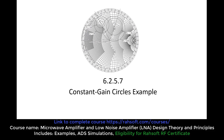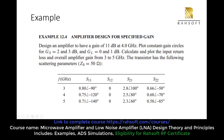In this part we are going to do an example on constant gain circles in order to understand the topic well. We want to design an amplifier for a specific gain of 11 — not a max gain. The design is going to be at 4 GHz.